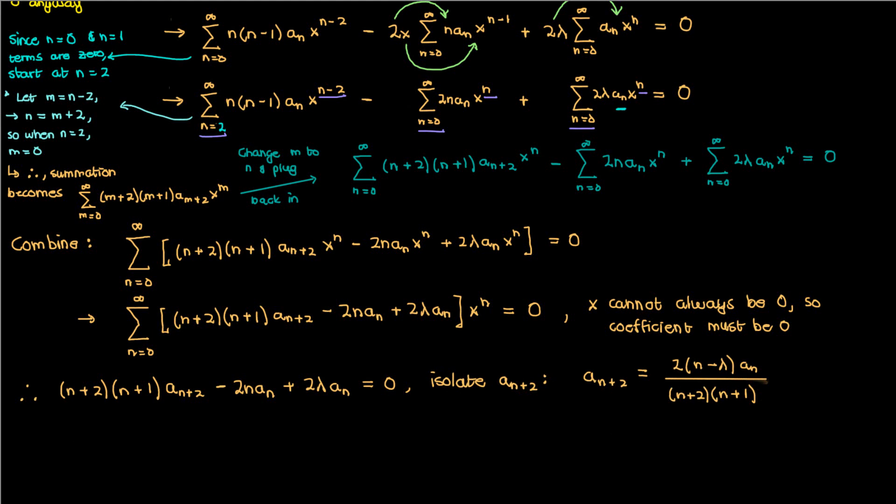Now a_{n+2} is only related to the coefficient that's two places behind it. So if I start at a_0, I'll then be able to find a_2, then from a_2 I can get a_4 and so on. However, I won't be able to get a_3 or a_5 or any odd indexed a from a_0 because there is no link between odd indexed a_n's and a_0. a_n is only related to the a that's two places behind it. On the other hand though, if I had a_1, I could get a_3, then a_5, and so on. So in the end I have two sequences of coefficients.